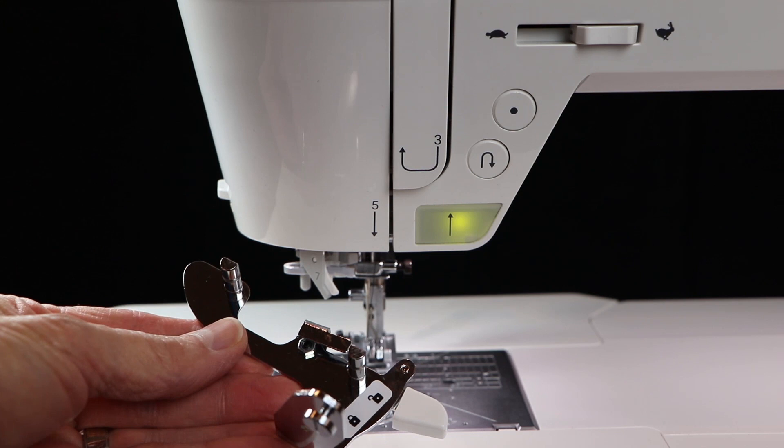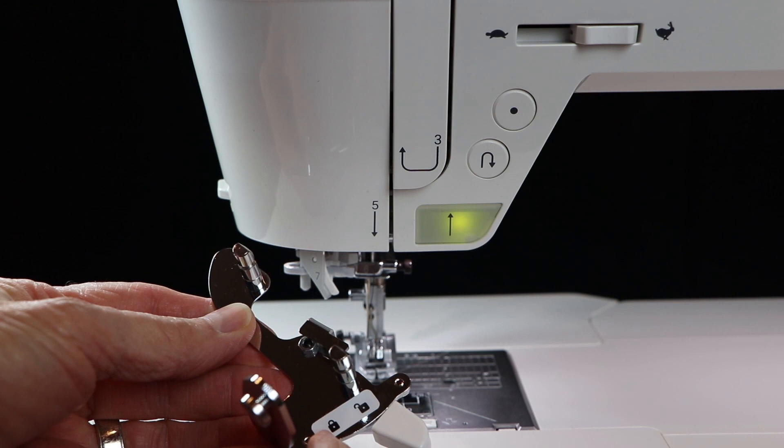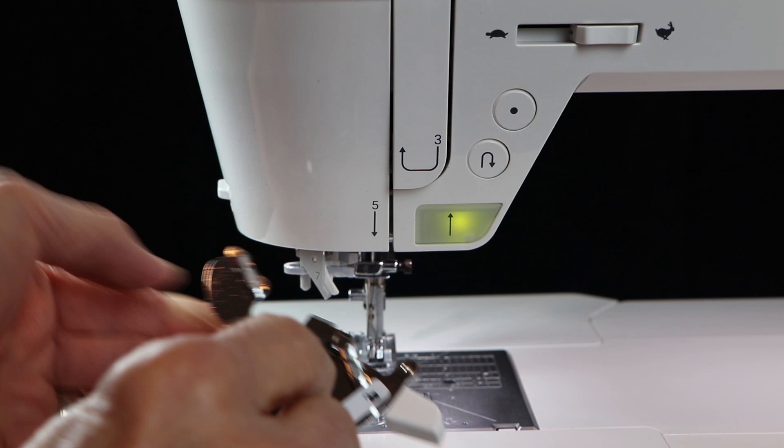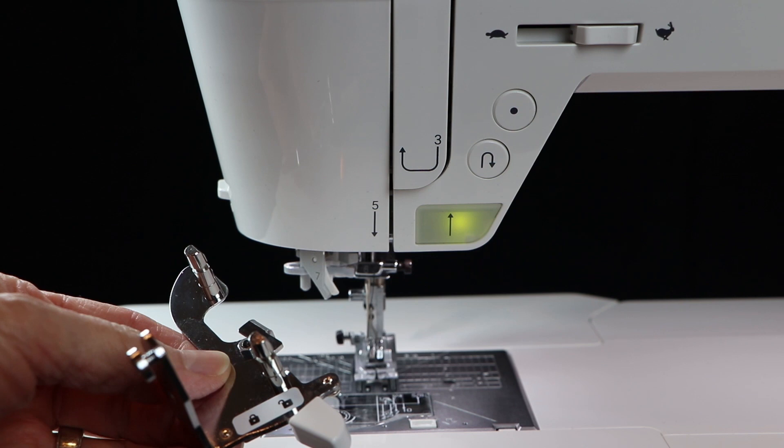First thing we want to do is mount our bracket to the machine. There are two posts and a locking mechanism. You can see here there's a little lock symbol, unlock and locked. These two posts have corresponding indentations into the housing of the machine.